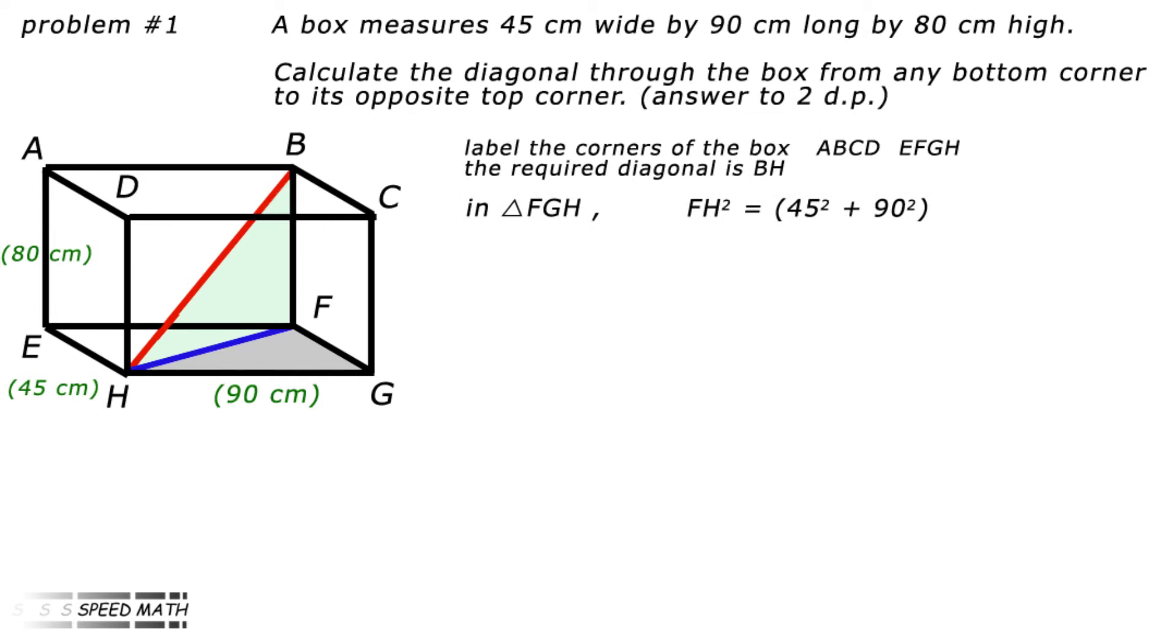In triangle FGH, shaded grey, FH squared equals 45 squared plus 90 squared. In triangle BFH, shaded green, BH squared equals FH squared plus BF squared which equals 45 squared plus 90 squared plus 80 squared which equals 2,025 plus 8,100 plus 6,400 which gives us 16,525.